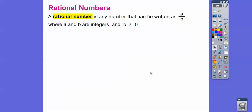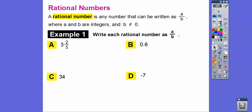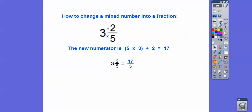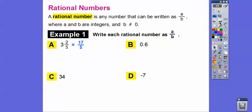A rational number is any number that can be written as a fraction a over b, where a and b are both integers, and you can never have zero in the denominator. We're going to change all of these numbers to look like a fraction a over b. Here's a mixed number — do you remember how to change mixed numbers into a fraction? We do five times three is 15, and 15 plus two is 17, so three and two-fifths is 17-fifths.